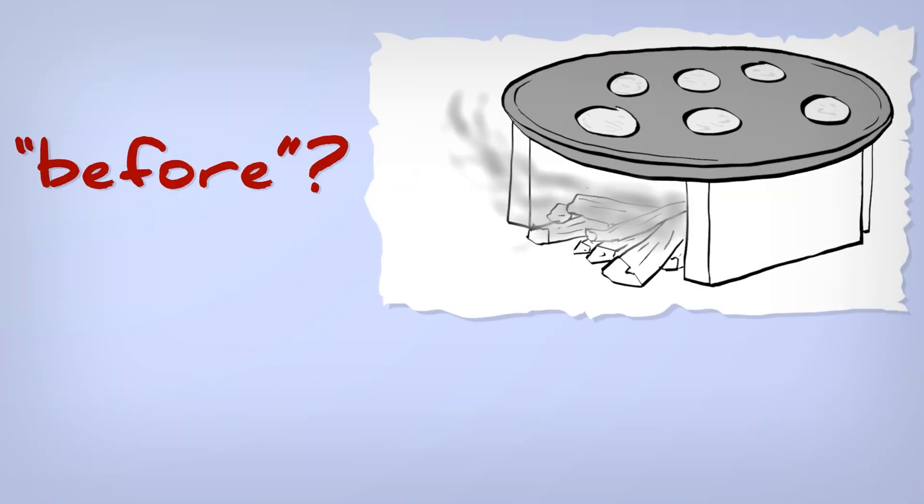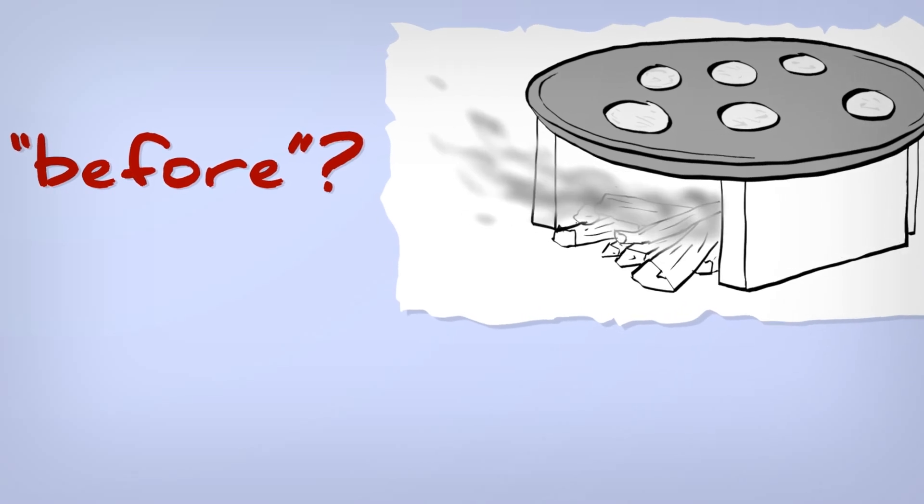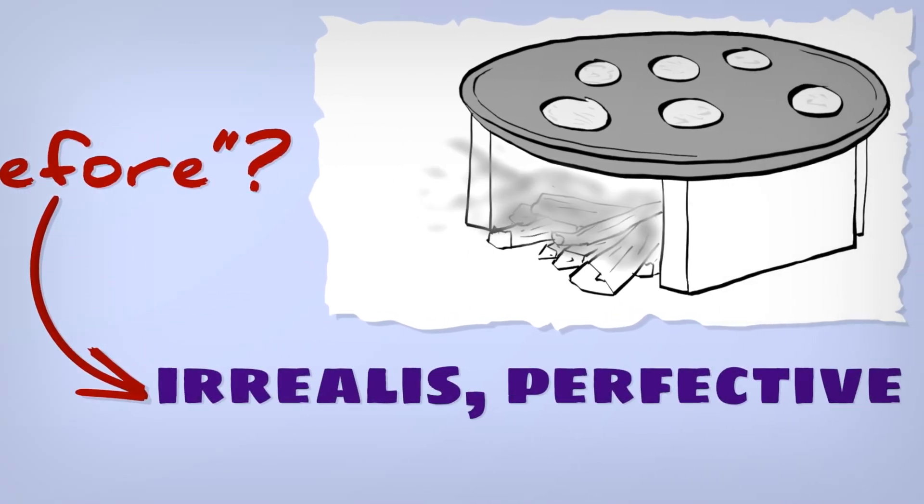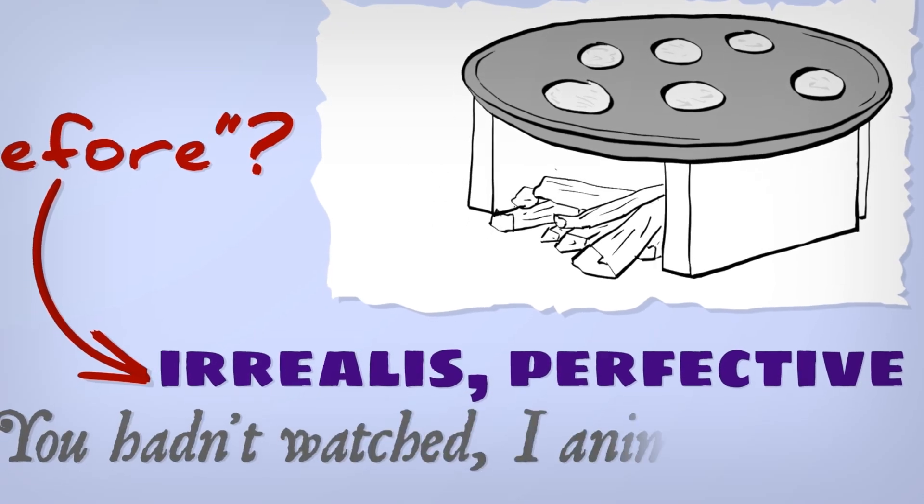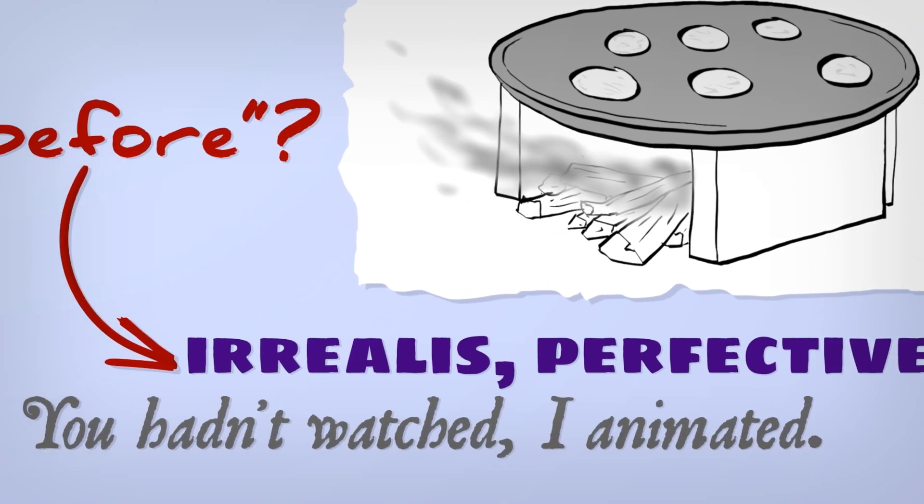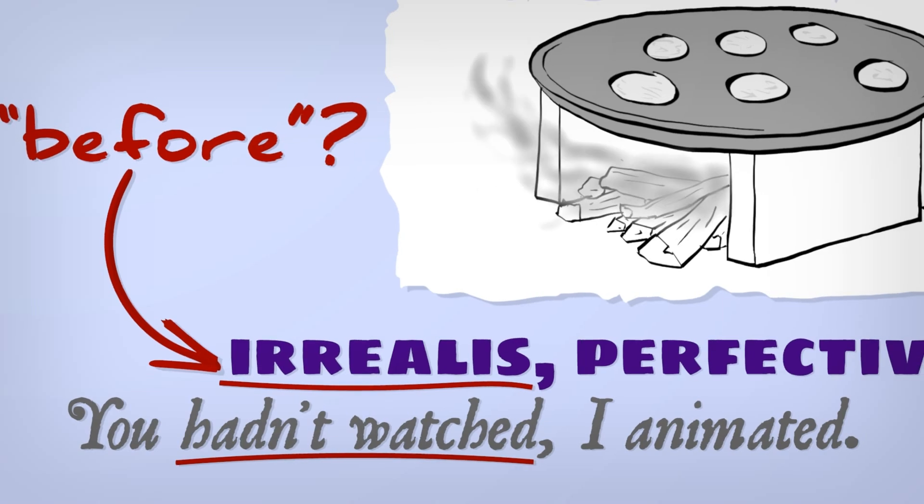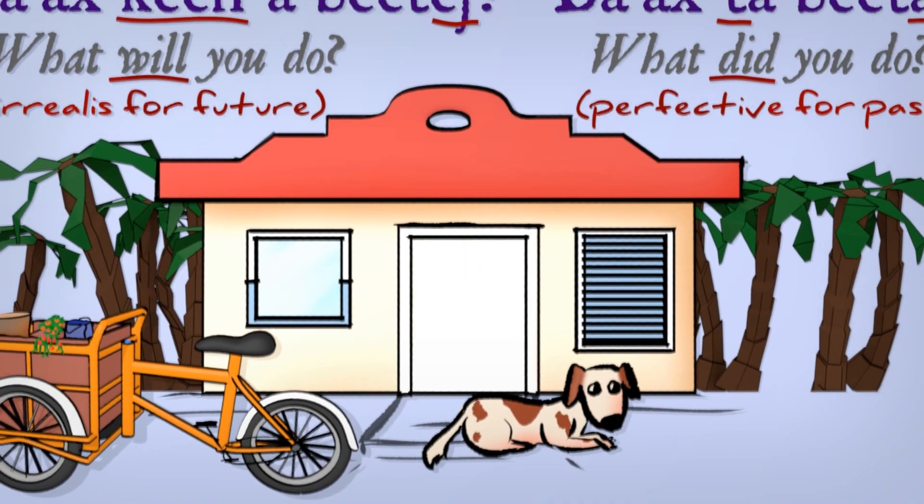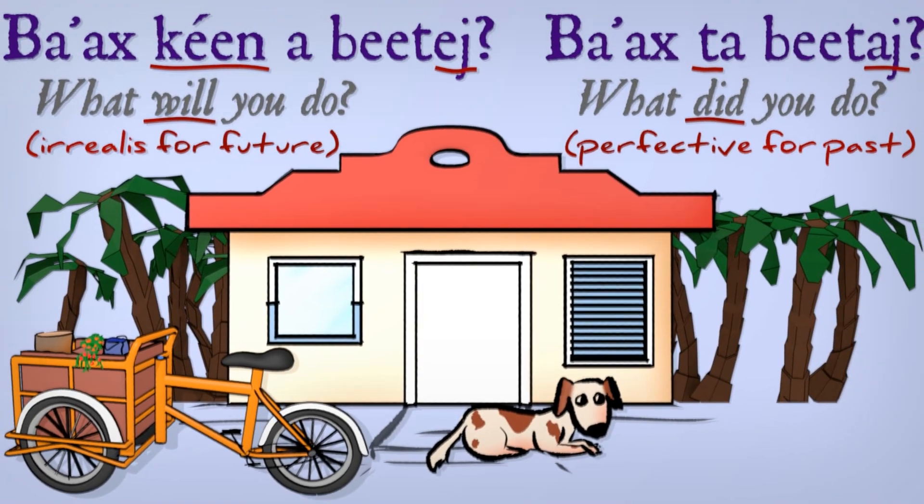Mood also gives Maya a way to say something like before without a word for it. Negative unreal plus event. You hadn't watched I animated. It's not far from I animated before you watched. Are we playing semantics though? Is perfective just another word for past? Does irrealis actually mean future?